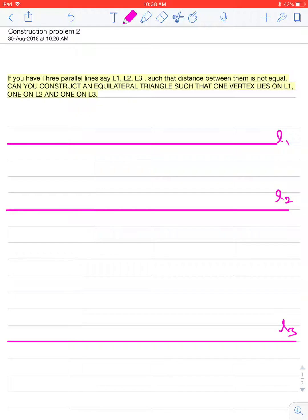Can you construct an equilateral triangle such that one vertex lies on L1, one vertex lies on L2, and one vertex lies on L3?